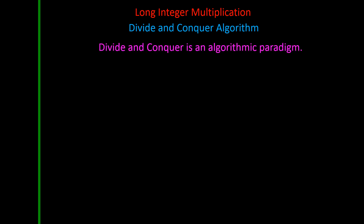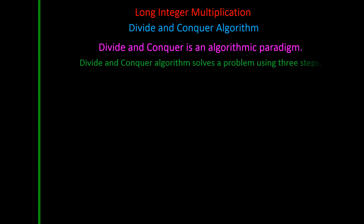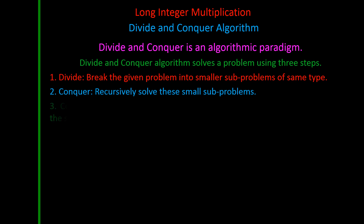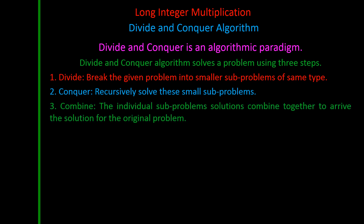Divide and Conquer is an algorithmic paradigm. It solves a problem using three steps: 1. Divide — break the given problem into smaller sub-problems of the same type. 2. Conquer — recursively solve these small sub-problems. 3. Combine — the individual sub-problem solutions are combined together to arrive at the solution for the original problem.